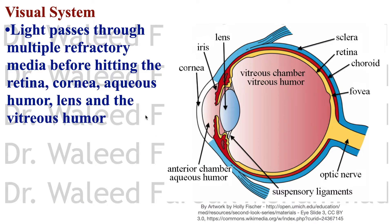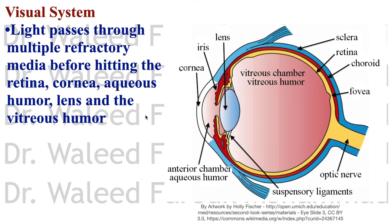The visual system — the receptor is the globe, or the eye, through which light passes through multiple refractory media before hitting the retina. Starting with the cornea, which has the highest refractive power — not the lens, but the cornea — then through the aqueous humor, then through the pupil and the lens that focuses the light rays on the fovea through the vitreous humor.